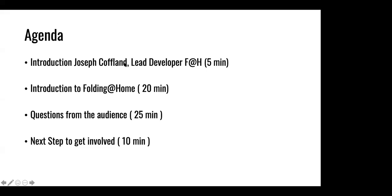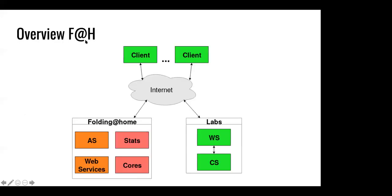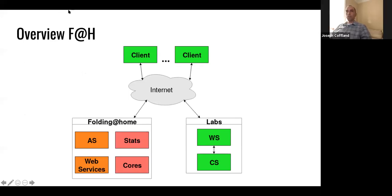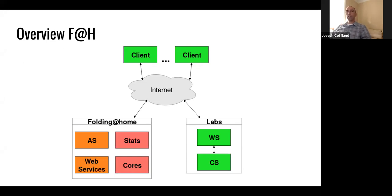Joseph, an overview of Folding at Home - take it away. So this is just a really simplified diagram of the Folding at Home system. The clients represent the software that people download from our website and install on Mac, Windows, or Linux. That connects to our systems over the internet. First when a client starts up, the first thing it does is contact the assignment server, or AS. We use a lot of acronyms just to shorten the names, particularly for typing purposes.